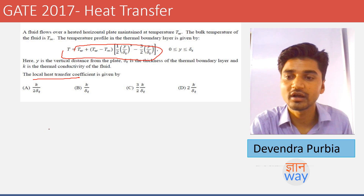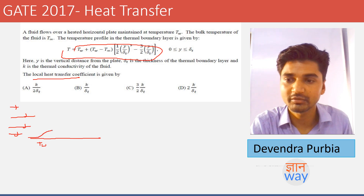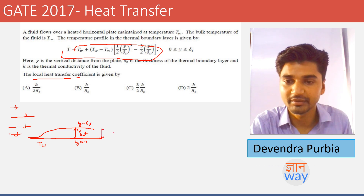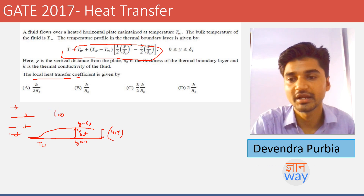The physical setup has a plate kept at temperature T_w with fluid flowing over it, generating a thermal boundary layer of thickness delta_t. At y equals zero we are at the plate surface, and at y equals delta we are at the edge of the boundary layer. Beyond that is the bulk region where the fluid temperature is T_infinity.